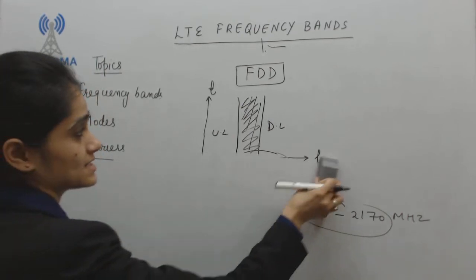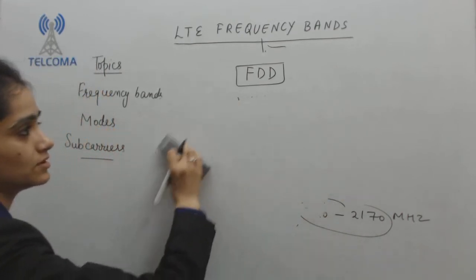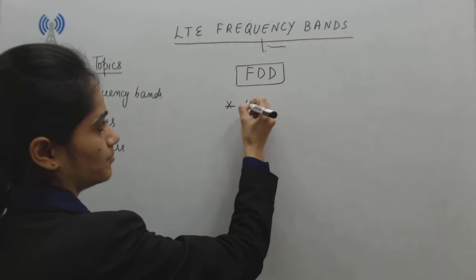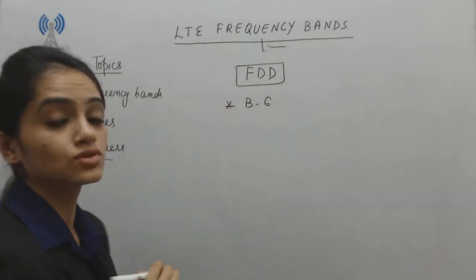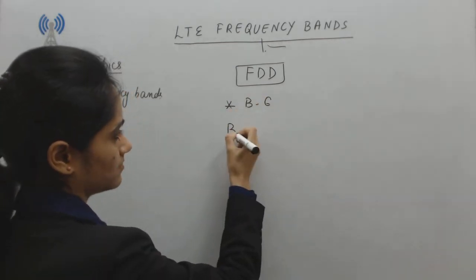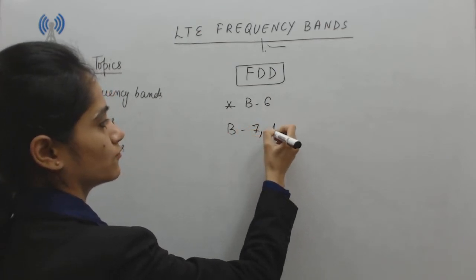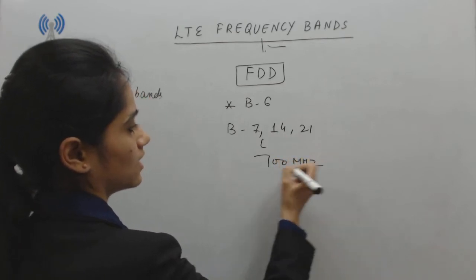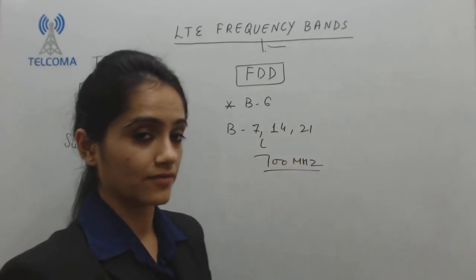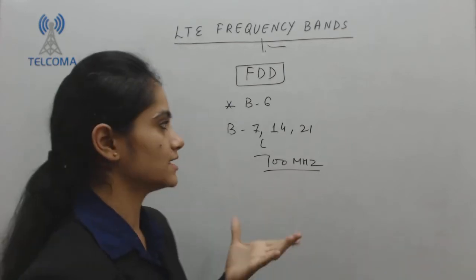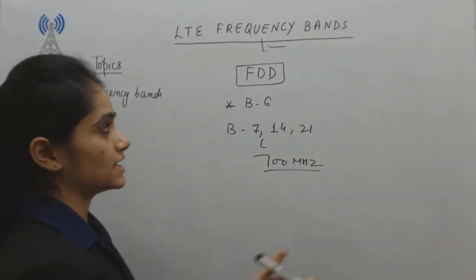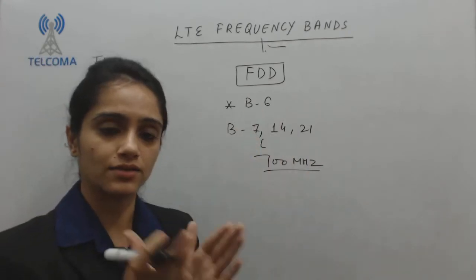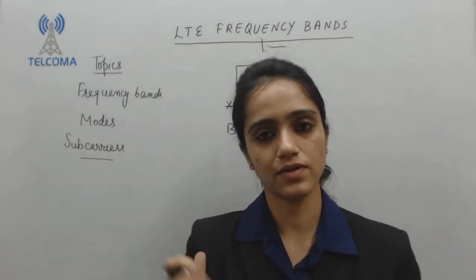We have a number of bands available in FDD mode. Out of those, band number 6 is not applicable. Bands number 7, 14, and 21 which work on the 700 megahertz band are the most commonly used, because the lower the frequency, the larger the distance it covers. These are the bands available in FDD mode, where you divide the frequency.